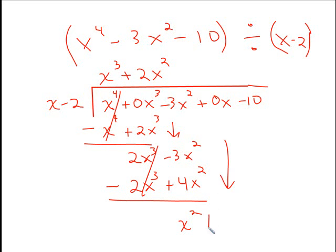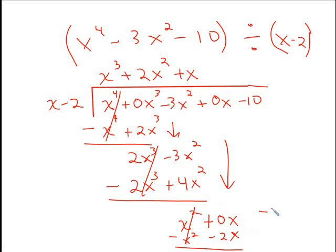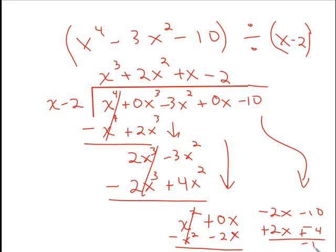Bring down 0x and repeat the process. Plus x times x gives x squared; x times negative 2 gives minus 2x. Change the signs; this cancels, and we end up with negative 2x. Bring down the minus 10. Negative 2 times x gives negative 2x; negative 2 times negative 2 is positive 4. Change the signs — our remainder is negative 14. So the answer includes minus 14 over x minus 2.